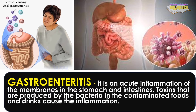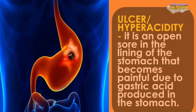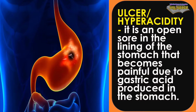Common ailments related to digestion. Gastroenteritis is an acute inflammation of the membranes in the stomach and intestines. Toxins produced by bacteria in contaminated foods and drinks cause the inflammation. Ulcer or Hyperacidity is an open sore in the lining of the stomach that becomes painful due to gastric acid produced in the stomach.